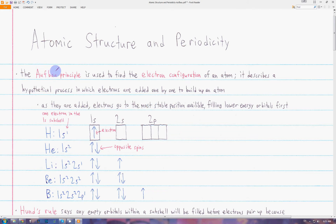We find the electron configuration using something called the Aufbau principle. This basically describes a hypothetical process in which atoms are built up by adding electrons one by one. As the electrons are added, they go to the most stable position—in other words, the lowest energy orbital that's not occupied yet.